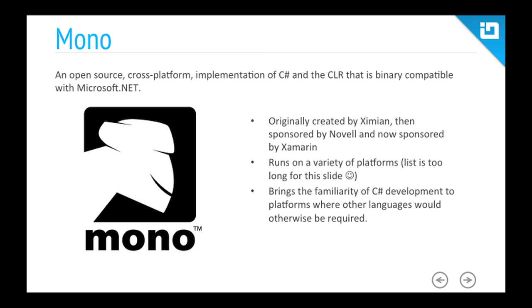Mono is an open source cross-platform implementation of C# and the CLR that is binary compatible with .NET. It was originally created by a company called Ximian, founded by Miguel de Icaza and Nat Friedman. It was then sponsored by Novell, and now it's fully under the direction of Xamarin. It runs on a variety of platforms — all kinds of game consoles, different computer platforms. Essentially, if there's a platform out there, Mono has probably been ported to run on it.